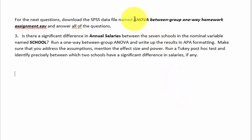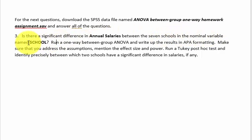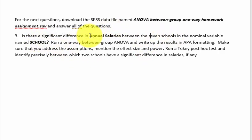This problem is from this dataset — it's in SPSS, and it's all preset for you. The question is: is there a significant difference in annual salaries between the seven schools in the nominal variable named school? School is our grouping independent variable — one IV with seven levels — and annual salaries is the dependent variable. That makes it a one-way ANOVA because it has only one IV.